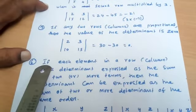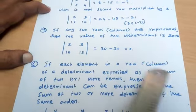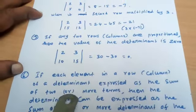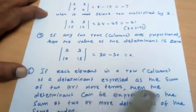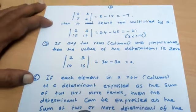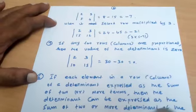Next property: if each element in a row or column of a determinant is expressed as the sum of two or more terms, then the determinant can be expressed as the sum of two or more determinants of the same order.